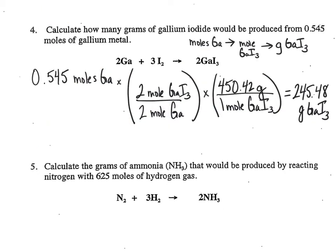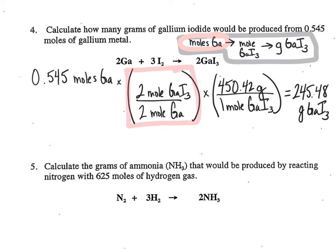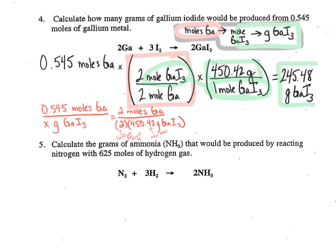Here's the next problem. I've laid out the steps: to get from moles of gallium to grams of a different material, I first use my mole-to-mole ratio with the coefficients. Then, once I know moles of gallium iodide, I use the fact that one mole of gallium iodide has a molar mass of 450 grams. Solving gives me 245.48 grams of gallium iodide. For the alternative method, I set up moles of gallium equal to the coefficient, then calculate grams of gallium iodide by multiplying the molar mass by the coefficient of 2, and cross-multiply to solve for X.